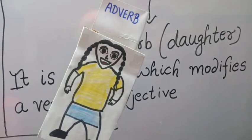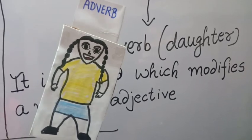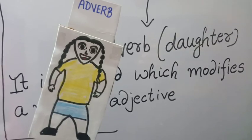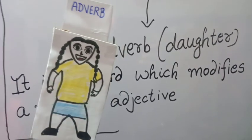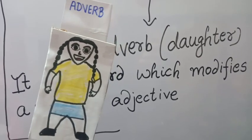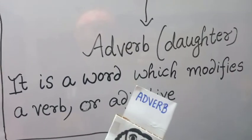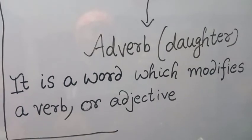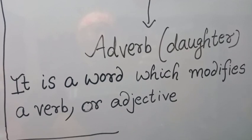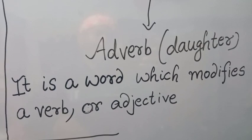Hello friends, I am Adverb. I love my mother Mrs. Verb and sister Adjective very much. I keep on modifying them always. This is the definition of adverb — it is a word which modifies a verb or adjective. For example: she runs fast. How does she run? Fast. So 'run' is a verb and 'fast' is the adverb.